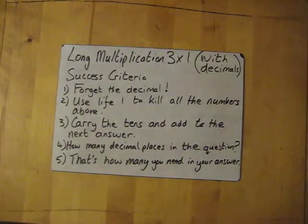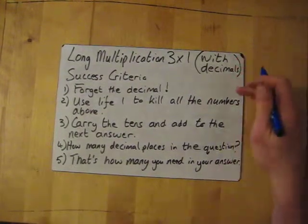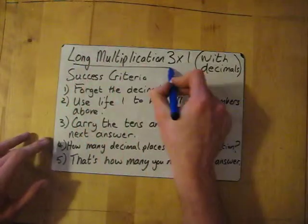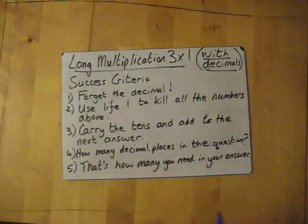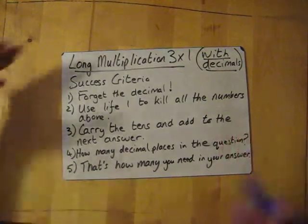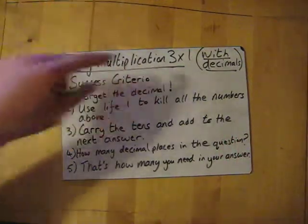Right, long multiplication 3 by 1, but this time with decimals. The success criteria: the first thing you need to do is it's exactly the same as long multiplication.